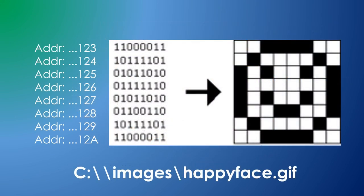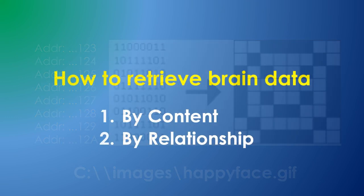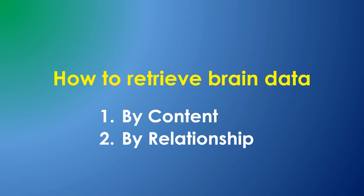In a computer, we can retrieve data from memory because we have the address. Without an address, how can we locate information within the brain? In this video, I'll demonstrate two methods, by content and by relationship.